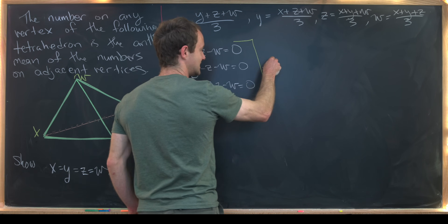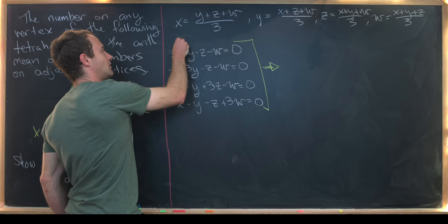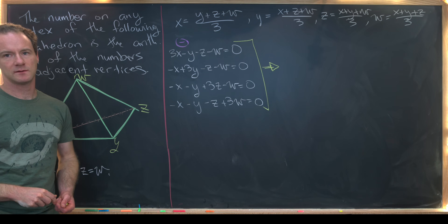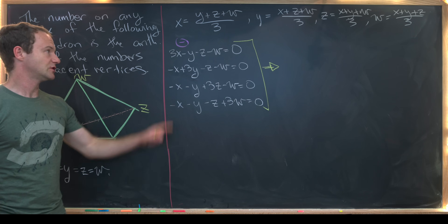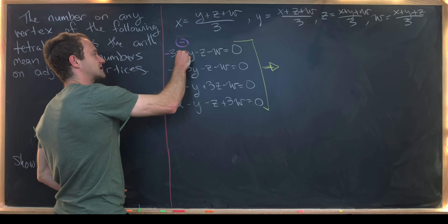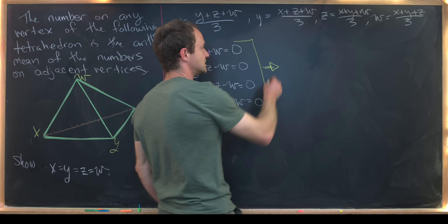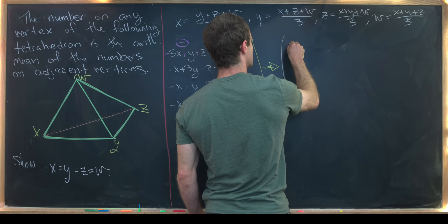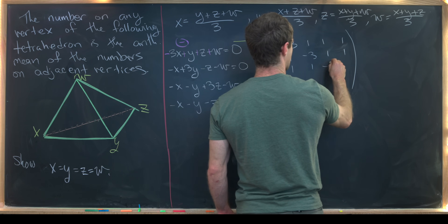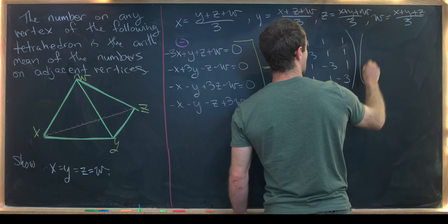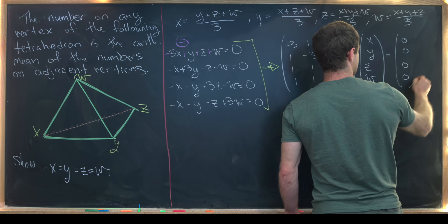Now we can change this system of equations to a matrix equation. We'll multiply the entire system by −1, which does not change any of the data. That gives us the following matrix equation: the matrix with rows [−3, 1, 1, 1], [1, −3, 1, 1], [1, 1, −3, 1], [1, 1, 1, −3] times the vector (x, y, z, w) equals the zero vector (0, 0, 0, 0).